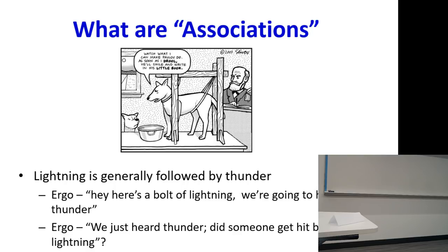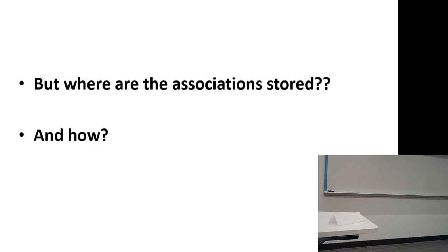What exactly is associationism? Here's an example: lightning is really followed by thunder. So if you see a bolt of lightning, you're going to expect thunder. On the other hand, if you hear thunder, even if you haven't seen the lightning, you assume that lightning has struck somewhere close by. You've formed an association between lightning and thunder.